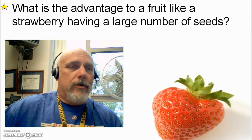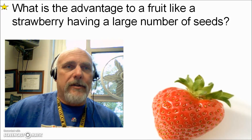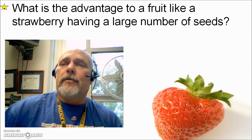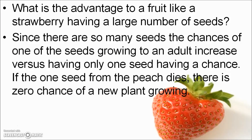Is there an advantage to having many seeds like the strawberry? Yes, there can be advantages. Since there are so many seeds, the chances of one growing into an adult increases. If the one seed from the peach dies, there's zero chance of that fruit producing a new plant. Versus the strawberry — if one dies, there are still perhaps a hundred strawberry seeds from that fruit that could grow, increasing the chances that at least one survives to form a new plant.